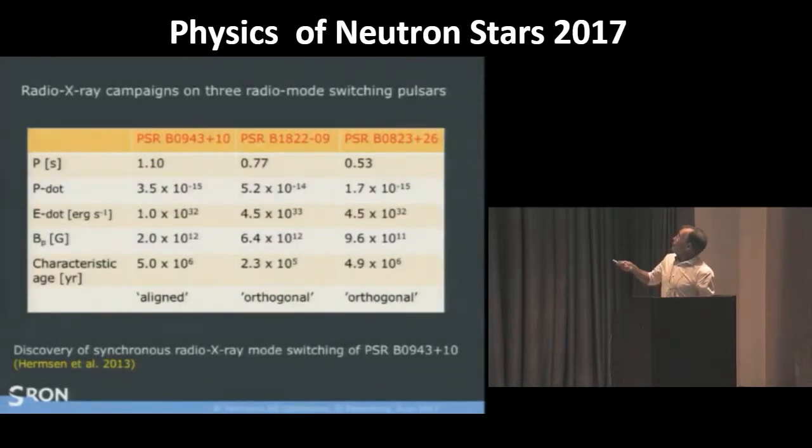That's different from PSR 1822, which is very much younger and much more energetic as a stronger magnetic field. This one is nearly aligned. This one we take as being orthogonal based on the fact that we see a pulse and likely an interpulse. But there are other views on this in the radio community, also by Nikitina and Malov. 0823, that is also based on the radio parameters, an orthogonal pulsar.